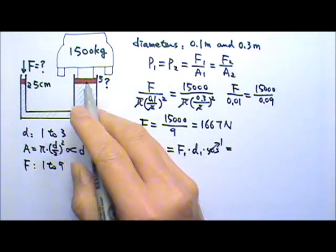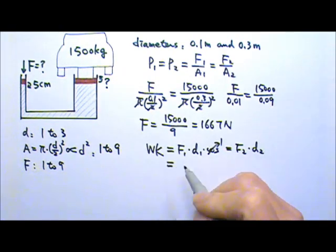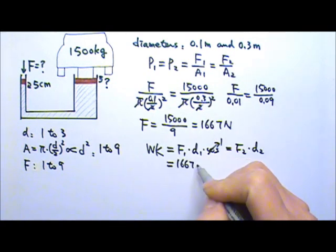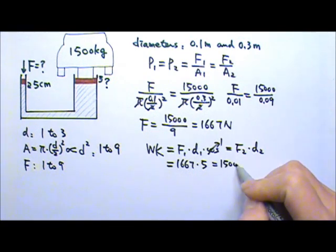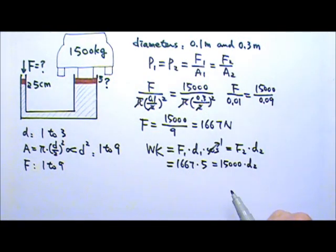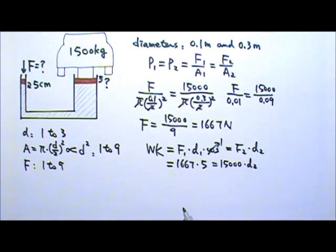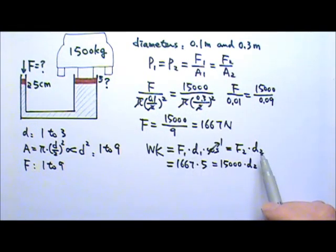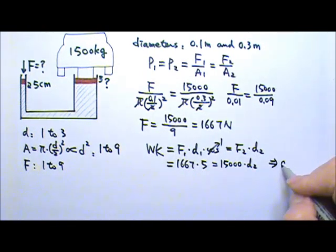On the other side, I have force 2 times displacement 2. So the force on one side is 1667 times 5 centimeters, equals the force on the other side times the displacement on the other side. Notice I used 5 centimeters without converting to meters — because with displacement on both sides, using centimeters on one side gives centimeters on the other. This gives d2 equal to 5 centimeters divided by 9.